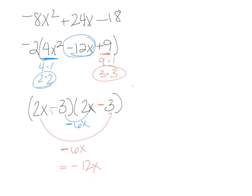So I don't deal with the negative signs until the end, and I just make sure that I can get the right sign in the middle and the right sign on the end. So my final answer is negative 2, 2x minus 3, 2x minus 3, or we can write it as negative 2 times 2x minus 3 squared.